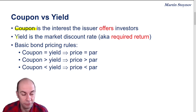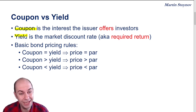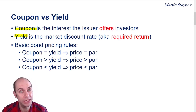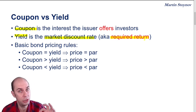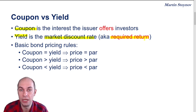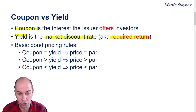Now, that's very, very different from yield or yield to maturity. Because yield is actually what the market requires — yield is what investors require. We are going to refer to this as either the market discount rate or the required return of the bond. So coupon is fixed and it is determined by the issuer, whereas the yield is determined by the market. The yield is determined by the perceived credit risk of the bond.